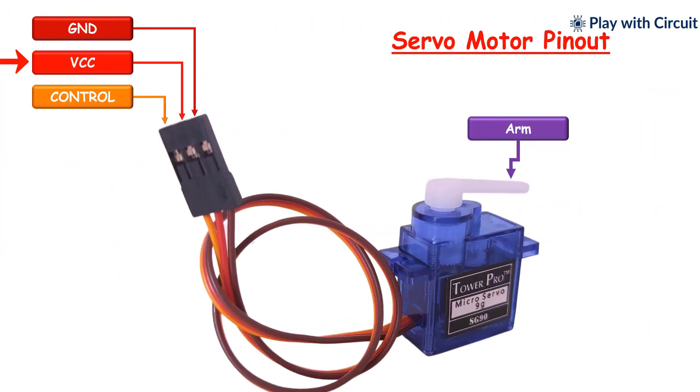VCC, this pin provides the voltage required for the operation of the servo motor. GND, this pin serves as the ground reference for the servo motor. Control, this pin controls the position of the arm of the servo motor. It receives PWM signals.